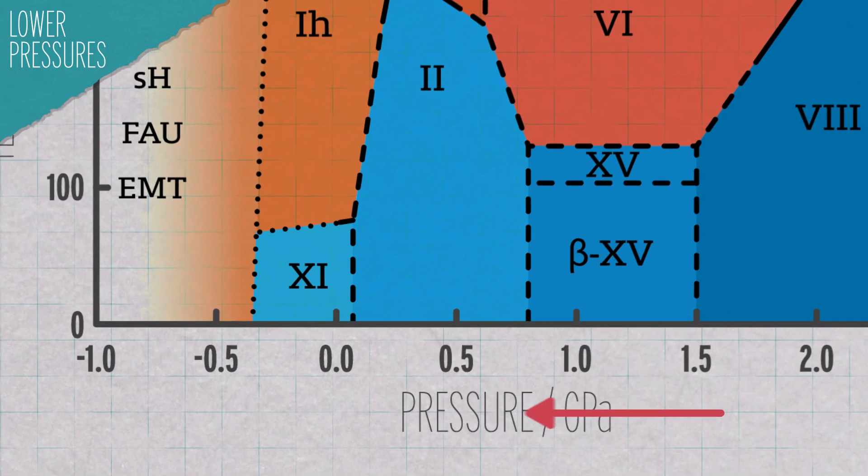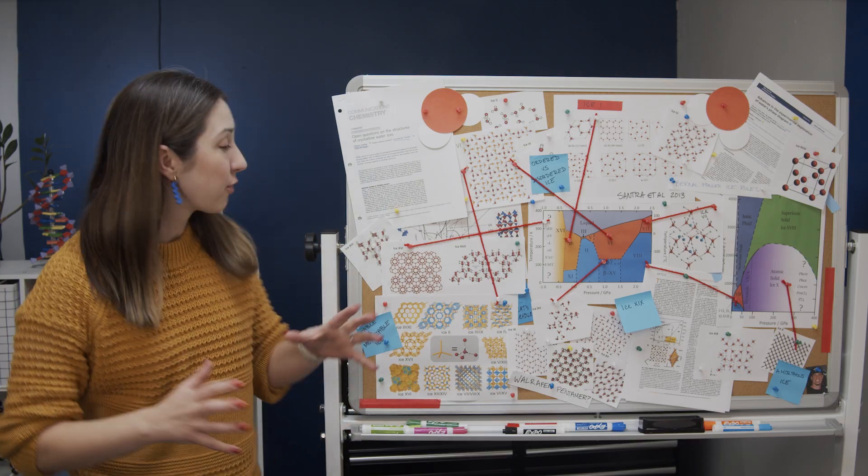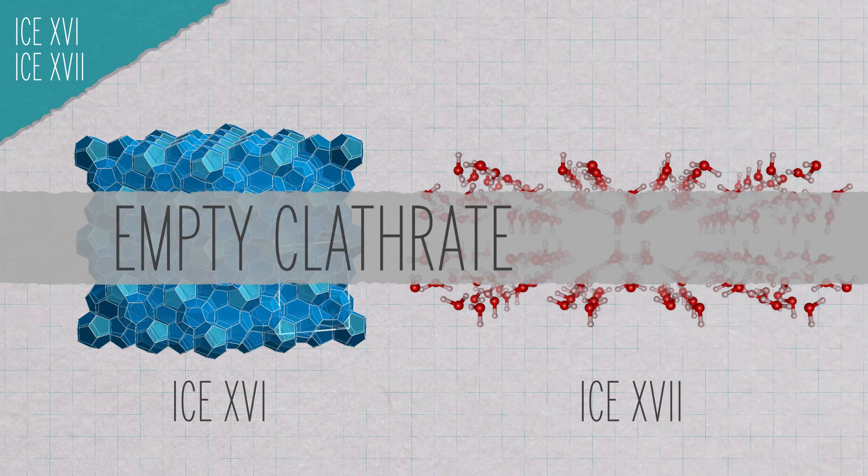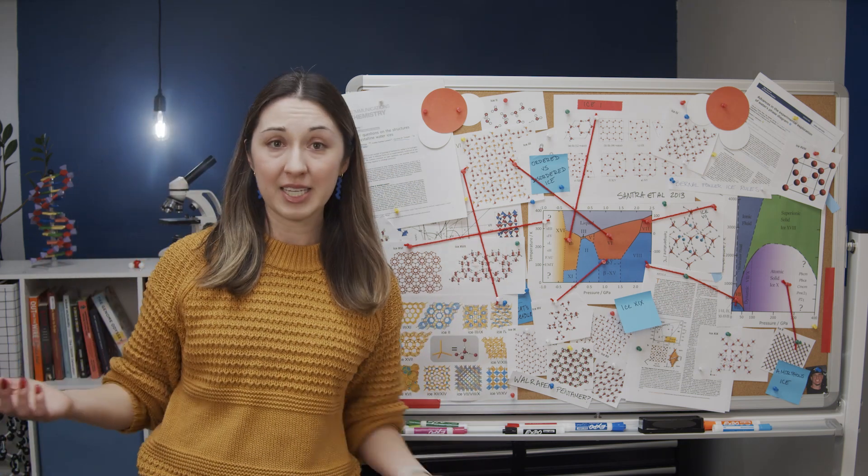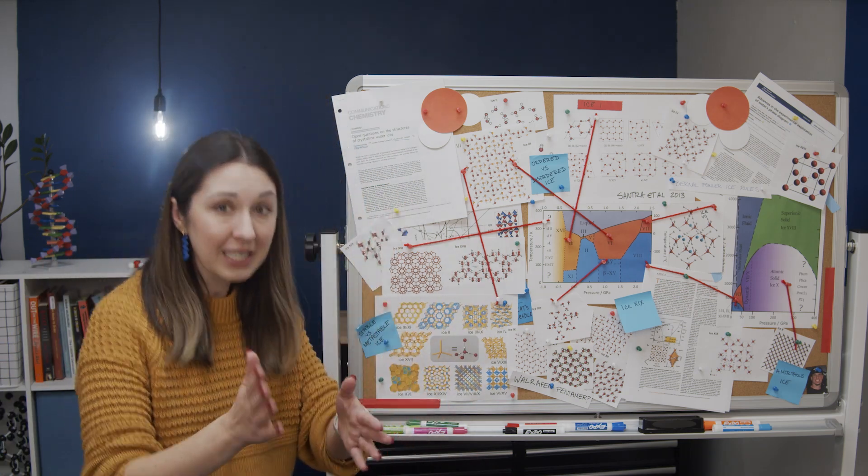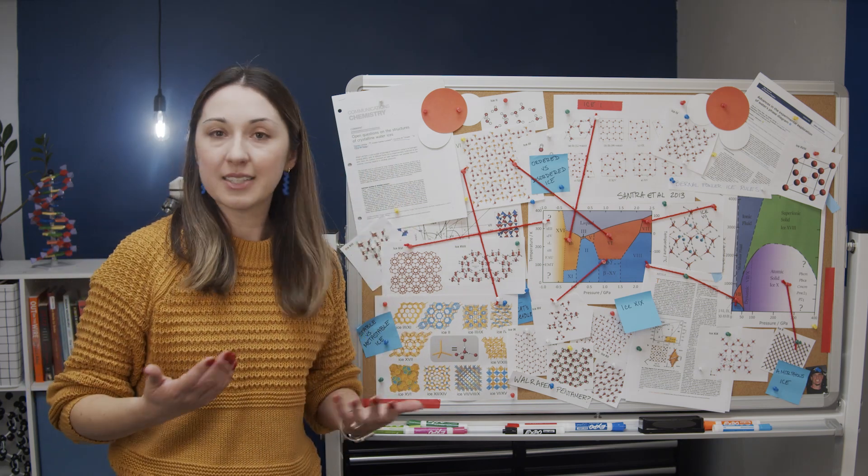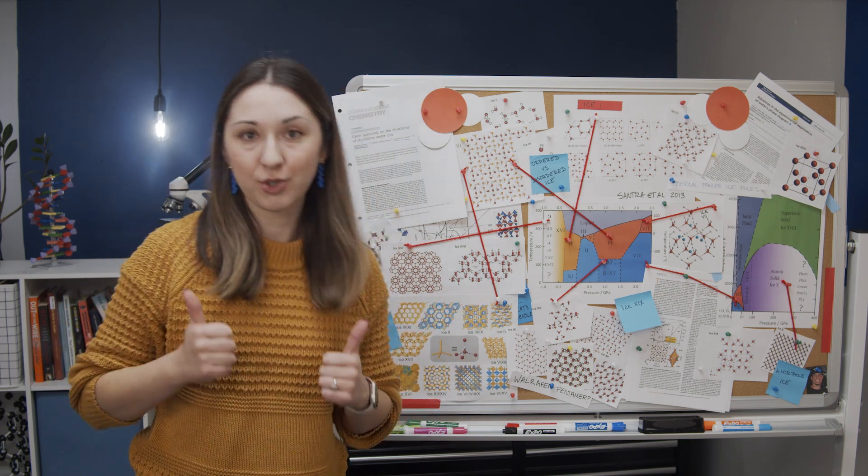What if we go the other way on the graph and turn the pressure to negative, essentially stretching ice? Well, what we can actually get are forms of ice that are less dense than ice 1, things like ice 16 and 17. These are empty clathrate hydrates. Clathrates are molecular cage structures that often enclose another molecule, so these are basically big, empty cage structures. Typically, these are made in the lab by forming the cage structure around another molecule, something like neon, and then vacuum pumping all of those caged molecules out.